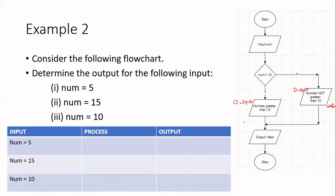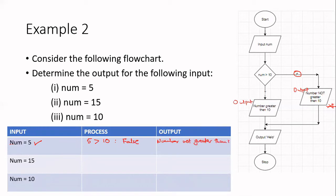We can go a bit faster with this flowchart. For the first input value, num is 5. From there we test our condition: is 5 greater than 10? That is false — 5 is not greater than 10. So following the false branch, we output 'number not greater than 10'. Continuing the branches, it's then going to tell me hello, and then it stops — it reaches the end.